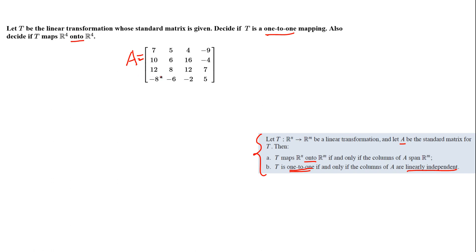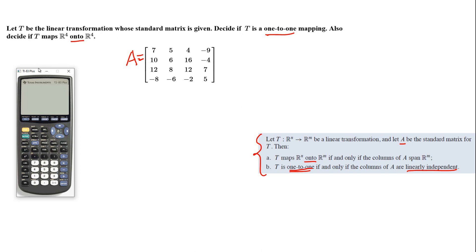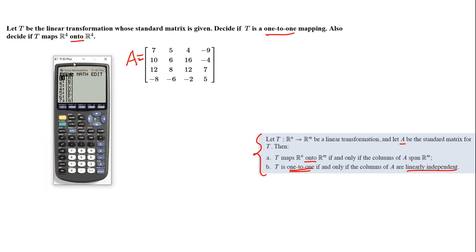This can be done by hand but it takes a lot of time, so I'm going to use a TI-83 or TI-84 calculator to convert this into reduced row echelon form. On the calculator, go to matrix by pressing second then x-inverse. Select Edit, move right, and choose matrix A — then press Enter.